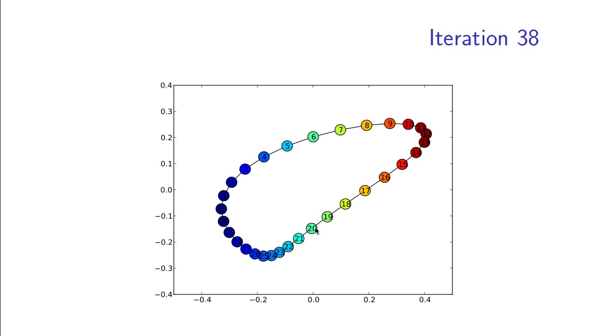But already after these 40 iterations or so, we see more or less the vertices being aligned in the way they would be by an actual eigenvector. Already if we give this vector as an input to the sweep algorithm, we will find an optimal cut of the cycle.